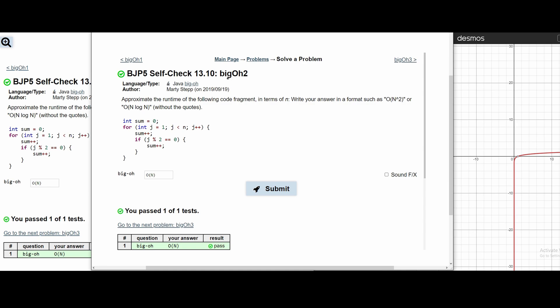We're now in Big O 2, so this is the next self-check exercise. We're asked the same question, and we have the following code. We have a single for loop, a statement right here, and a statement in here. Well, if you look at both of these...